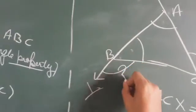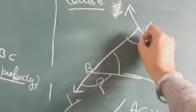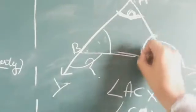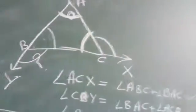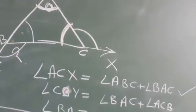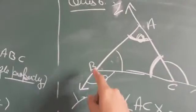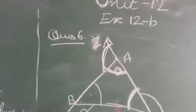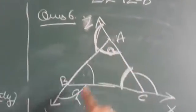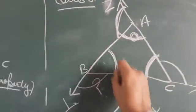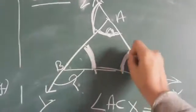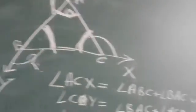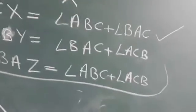So due to exterior angle property, angle ACX = angle BAC + angle ACB। The two interior opposite angles are BAC and ACB.